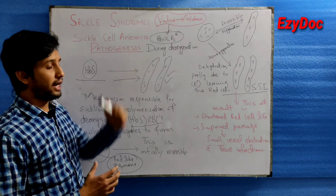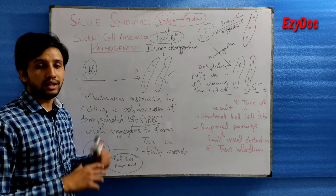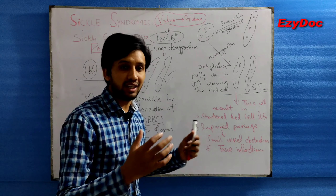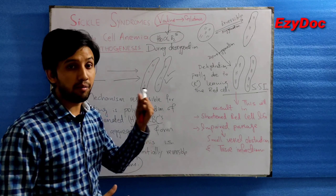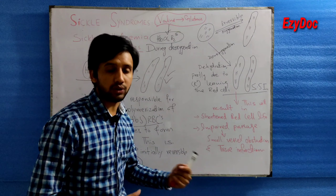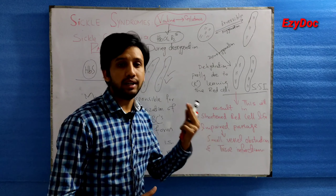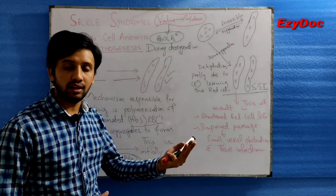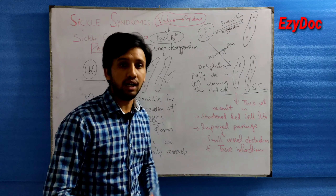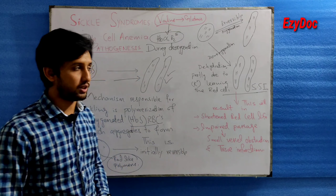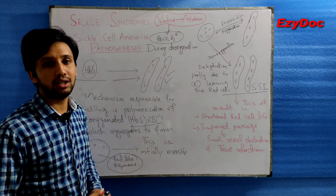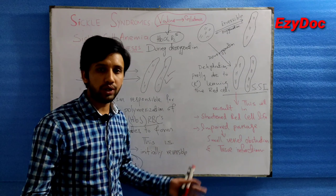The rate of sickling depends on several factors: number one is the extent of deoxygenation; number two includes dehydration, infection, and acidosis. All these are factors which determine the rate of the sickling process in sickle cell anemia.